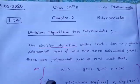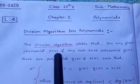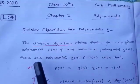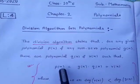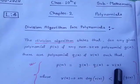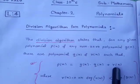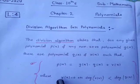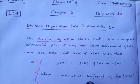The division algorithm states that for any given polynomial p(x) and non-zero polynomial g(x), there are polynomials q(x) and r(x) such that p(x) = g(x)·q(x) + r(x). This represents the dividend, divisor, quotient, and remainder. This process continues till r(x) = 0 or the degree of r(x) is less than the degree of g(x).